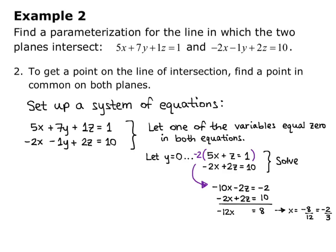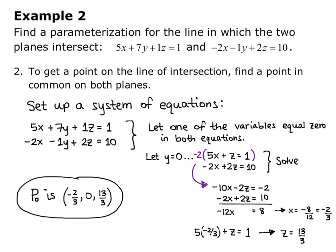Now to solve for z, I'll plug x = -2/3 back into either equation. So I'll plug it into the first equation: 5 times (-2/3) + z = 1, and solving for z, we get z = 13/3. So that gives us a point on the line of intersection, a point in common on both planes. So p₀ is the point (-2/3, 0, 13/3).